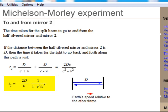If the distance between the half-silvered mirror and the reflecting mirrors is d, then the time of the trip for the beam moving parallel to the ether frame would be given by the expressions shown here.